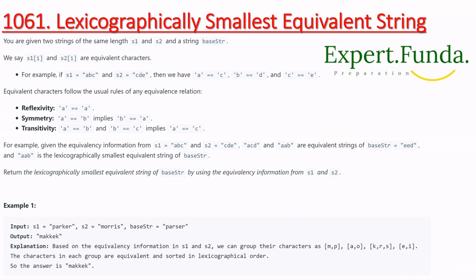Let's read the question. We are given two strings of the same length, s1 and s2, and another string baseStr. s1 and s2 have equivalent characters — for example, if s1 equals 'abc' and s2 equals 'cde', then a equals c, b equals d, and c equals e.